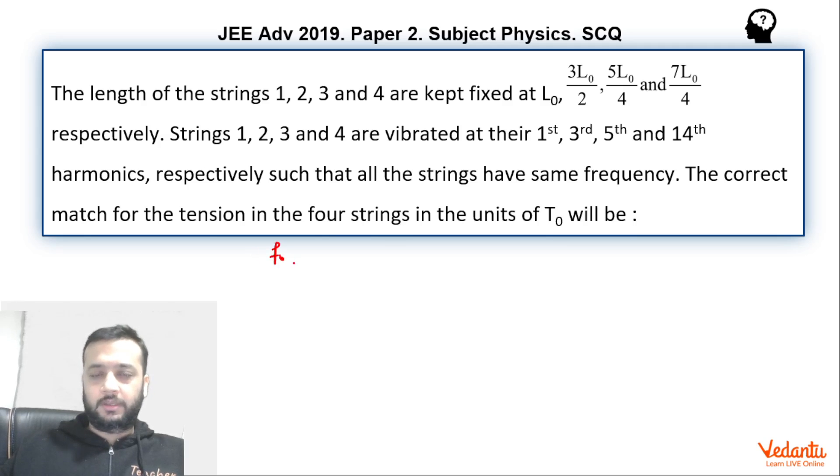What will be F0? For the first string, F is 1 by 2L0, because length is L0, into root of T0 by mu. Mu of the first string was mu only.